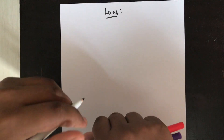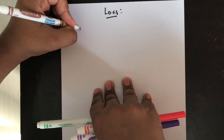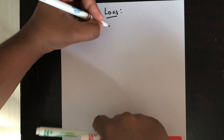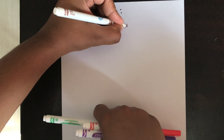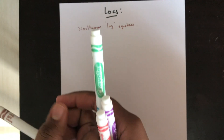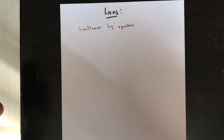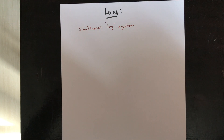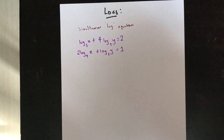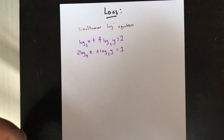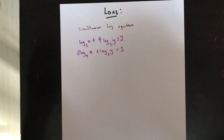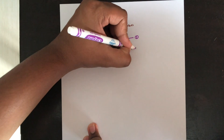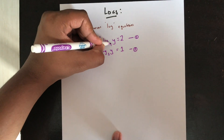Today we will be looking at simultaneous logarithmic equations. Previously we covered normal simultaneous equations, but this time we have simultaneous log equations. It's very similar to normal simultaneous equations, but here you're going to require logarithms — you might be required to change base and apply log rules. So I have equation 1: log x base 3 plus 4 log y base 9 equals 2, and equation 2: 2 log x base 4 plus log y base 2 equals 1.